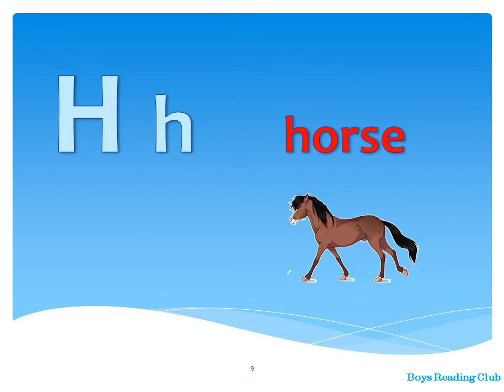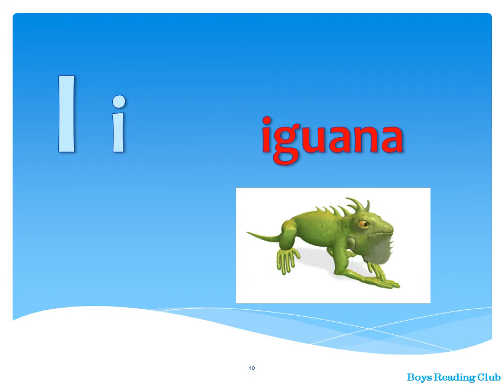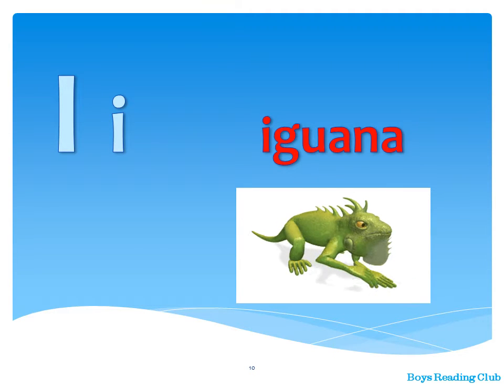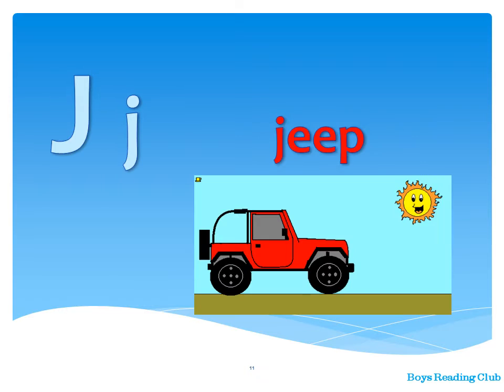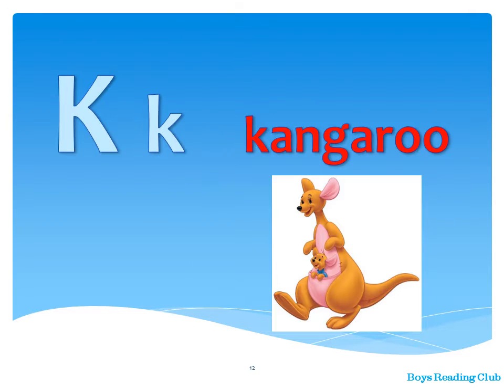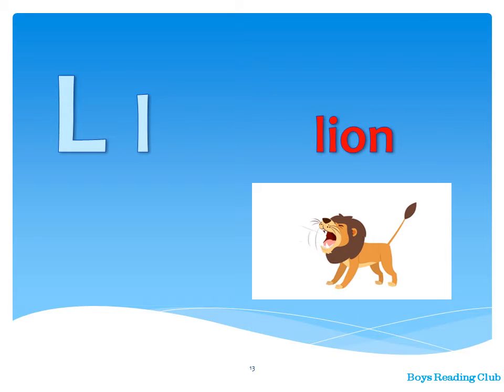H — Horse. I — Iguana. J — Jeep. K — Kangaroo.